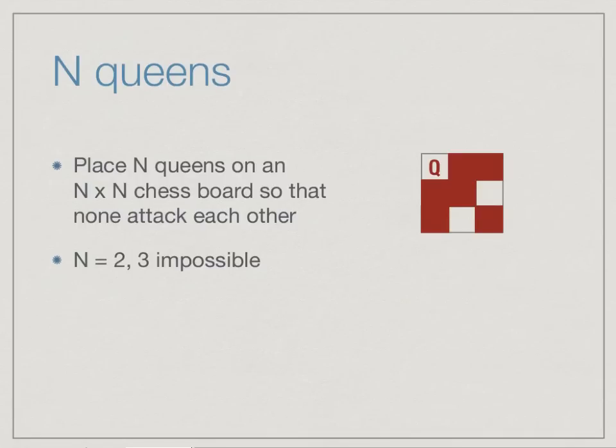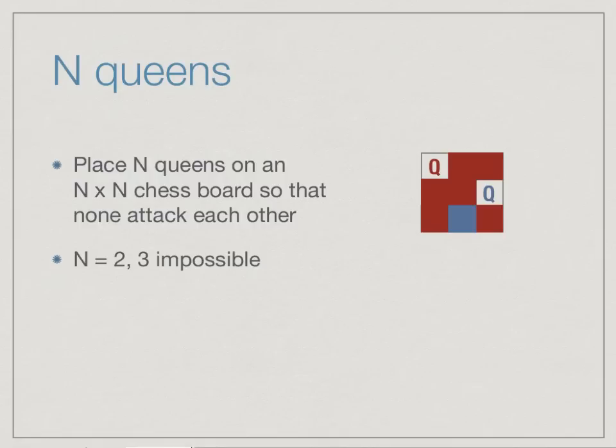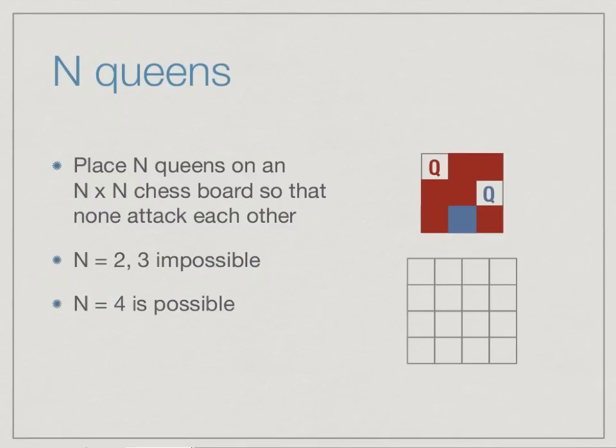For n=3, if we start by putting a queen in the top-left corner, it blocks the first column, first row, and main diagonal, leaving two slots for the second queen. But whichever slot we choose, it blocks the other, and there is no free slot for the third queen. Just by exhaustive analysis we can show n=3 is impossible.